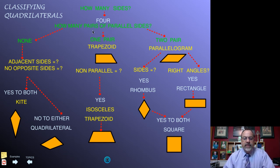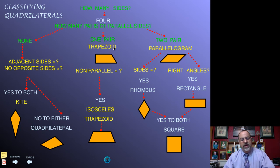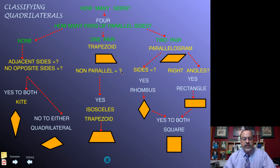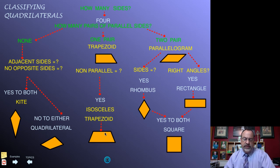Going back to the top: if our answer to the parallel sides question is one pair, then we classify it as a trapezoid. To get more specific, we ask: are the non-parallel sides congruent? If the answer is no, then it's simply a trapezoid. If the answer is yes, then we further classify it as an isosceles trapezoid.